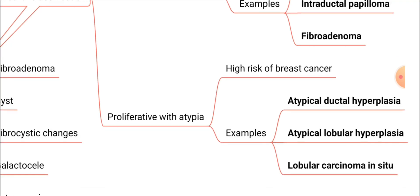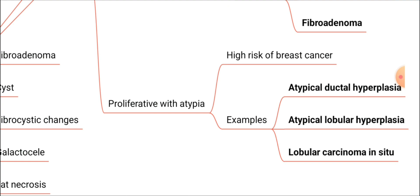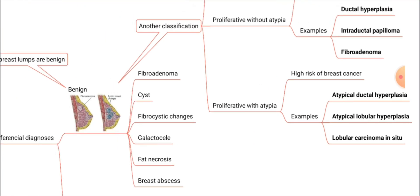The other category — proliferative with atypia — includes atypical ductal hyperplasia, atypical lobular hyperplasia, and lobular carcinoma in situ. These lesions, although benign, have a high risk of breast cancer. So if someone asks whether atypical ductal hyperplasia has a high risk of breast cancer, the answer is yes. This knowledge is essential for answering multiple choice questions.